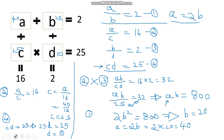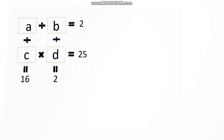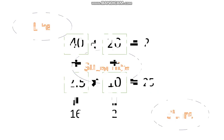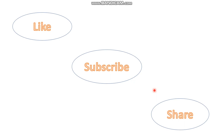So the four values are: a = 40, b = 20, c = 2.5, d = 10. Let us cross-verify: 40 ÷ 20 = 2 ✓, 40 ÷ 2.5 = 16 ✓, 20 ÷ 10 = 2 ✓, and 2.5 × 10 = 25 ✓. Thank you for listening patiently. Please like, subscribe, and share the video. Thank you one and all.